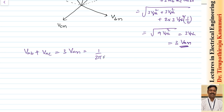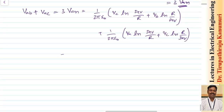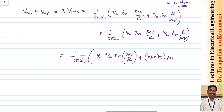Since we want capacitance with respect to neutral, we take the sum of the two equations for V_AB and V_AC. This gives 3·V_AN = 1/(2π ε₀) × [2Q_A · ln(D_eq/r) + (Q_B + Q_C) · ln(r/D_eq)]. Since Q_A + Q_B + Q_C = 0 in a balanced three-phase system, Q_B + Q_C = −Q_A.